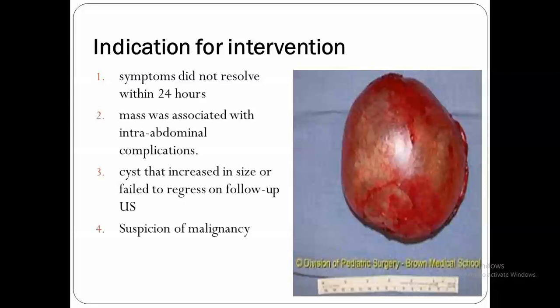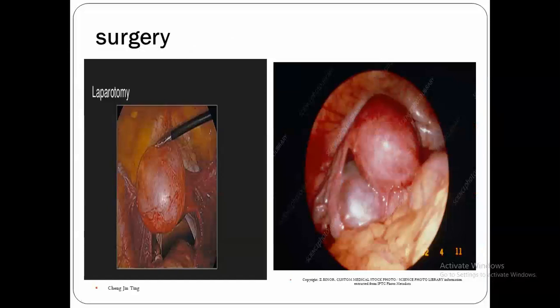Intervention is also indicated if there is suspicion of malignancy. Follicular cysts typically have a thin wall with clear contents, but may be hemorrhagic if associated with hemorrhagic complications. Surgery is performed by laparotomy or laparoscopy. Since these cysts are functional and occur in reproductive years, all precautions must be taken to preserve fertility, even for large cysts. We can de-roof the cyst, take out the contents, and gently remove the capsule.